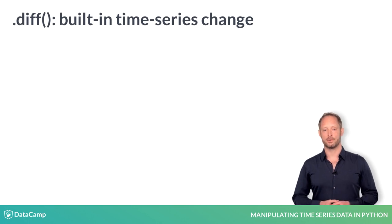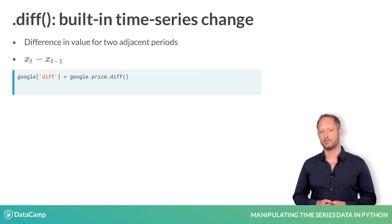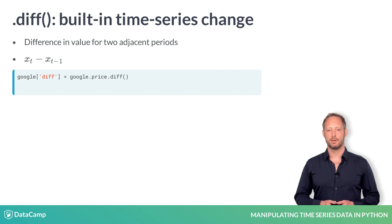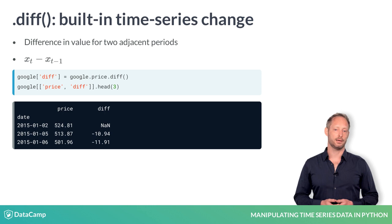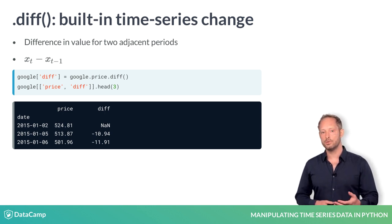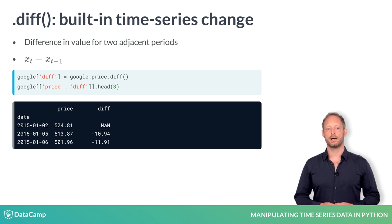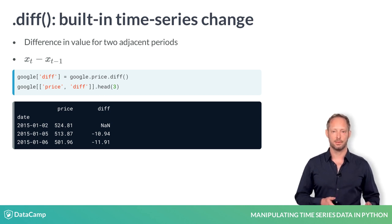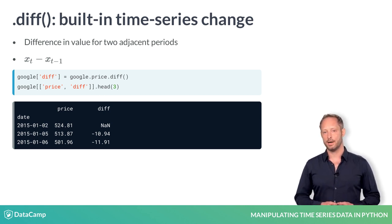Another time series method is .diff, which calculates the change between values at different points in time. By default the diff version of the close price is the difference in value since the last day stocks were traded. You can use this information to also calculate one-period returns — just divide the absolute change by the shifted price and then multiply by 100 to get the same result as before.